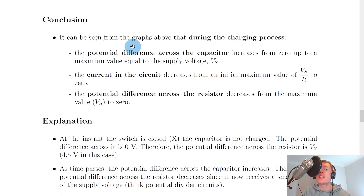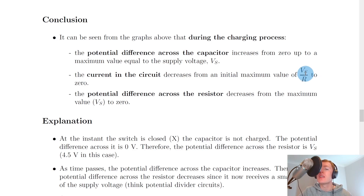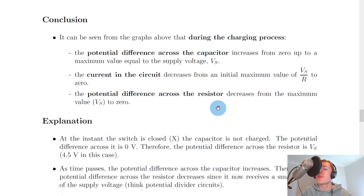In conclusion, during the charging process, the potential difference across the capacitor increases from 0 up to a maximum value equal to the supply voltage Vs. The current in the circuit decreases from an initial maximum value of Vs/R to 0 — from Ohm's law, I = V/R, so I_max = Vs/R. The potential difference across the resistor does the opposite to the capacitor, decreasing from a maximum of Vs down to 0.